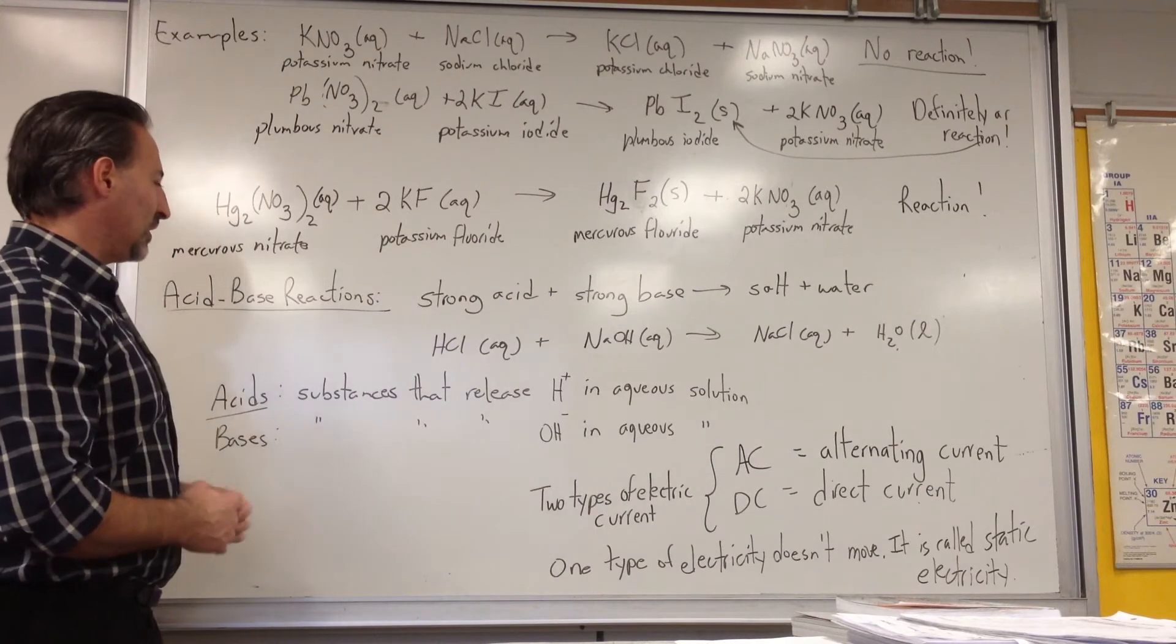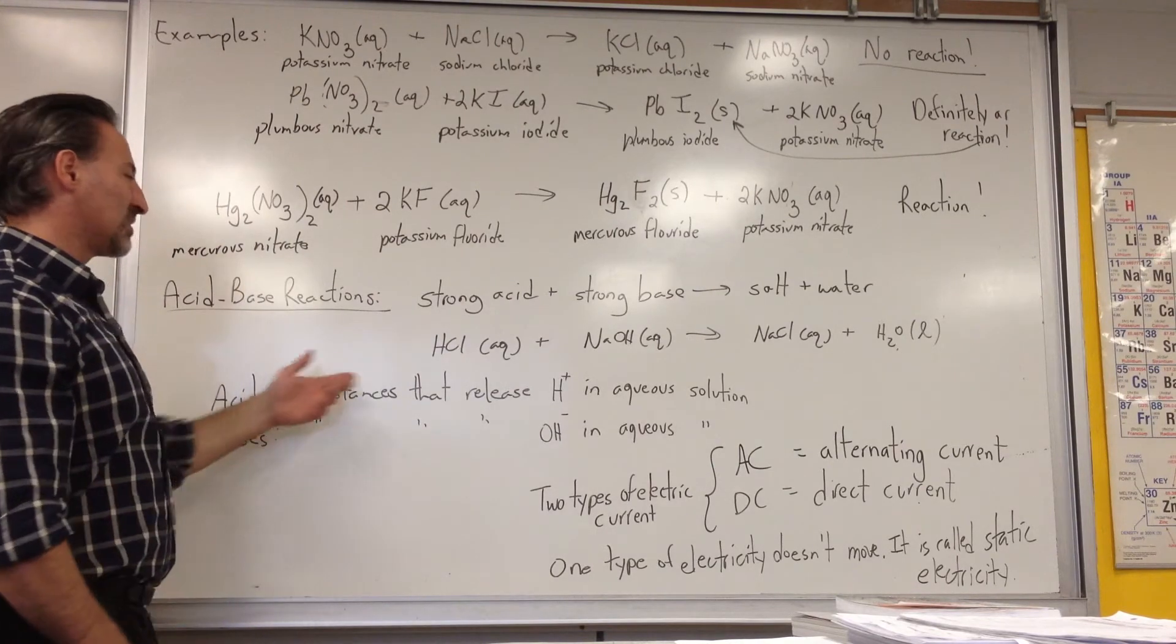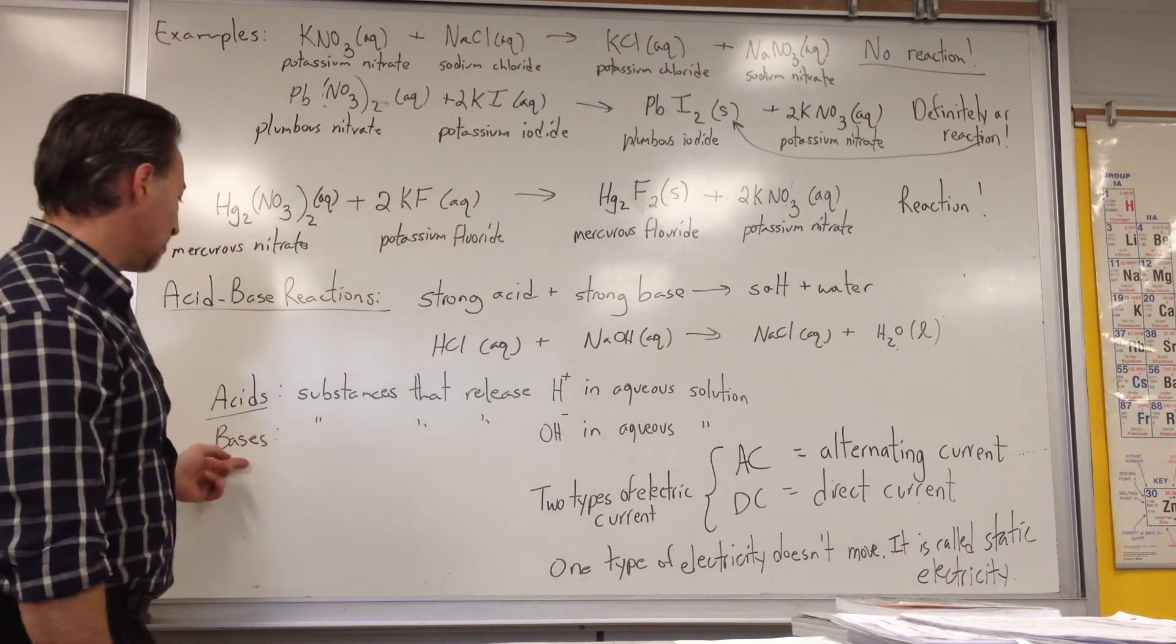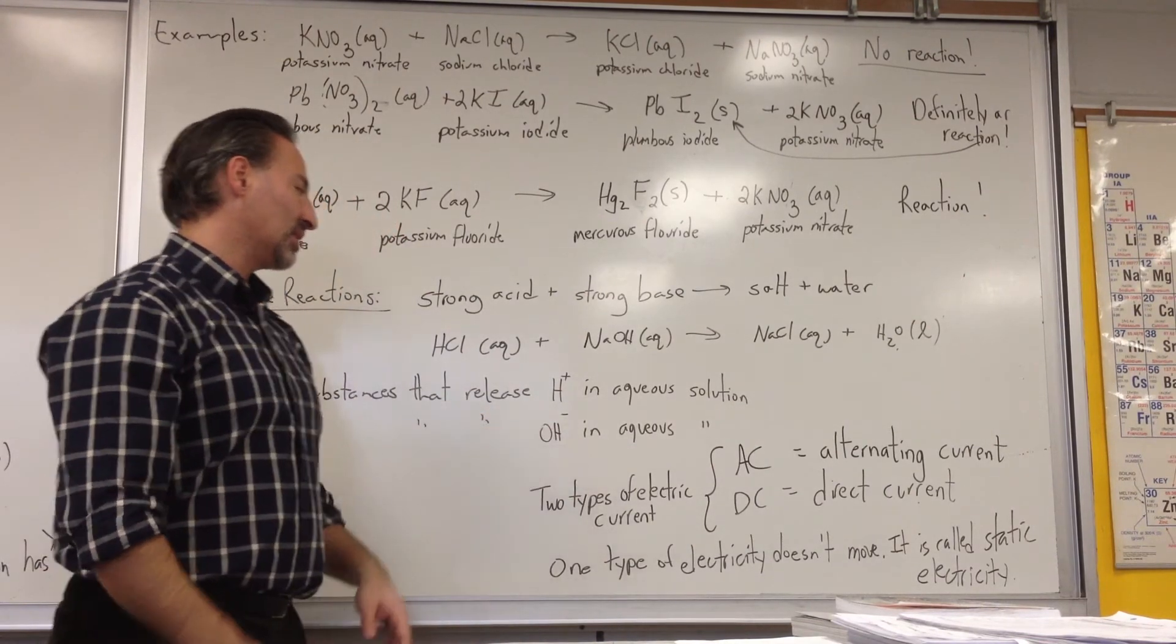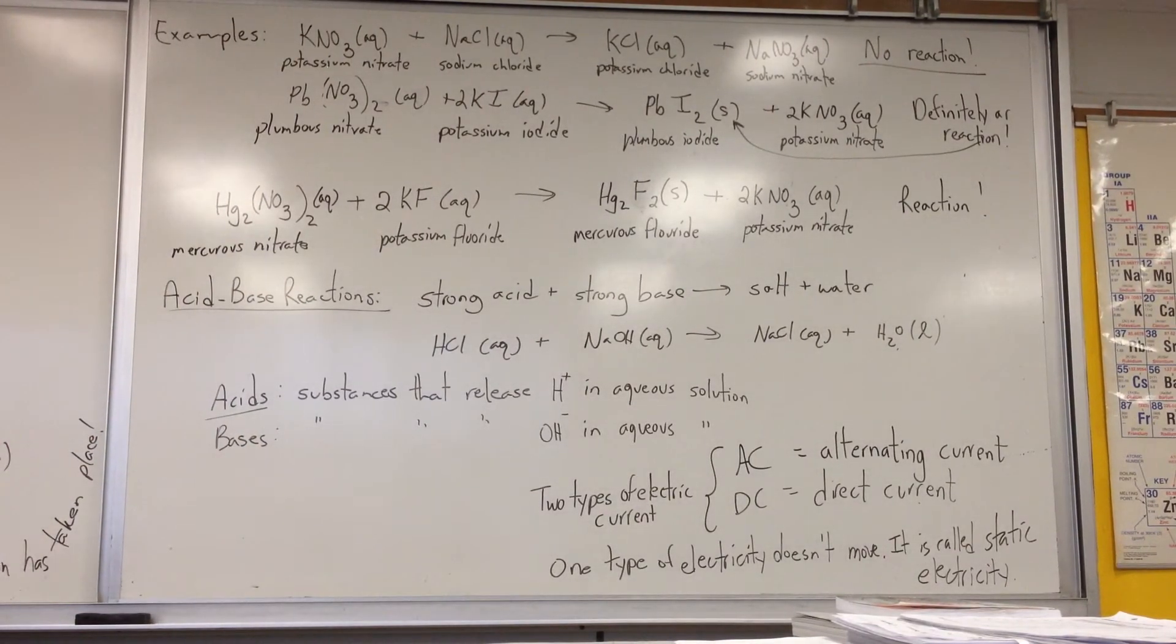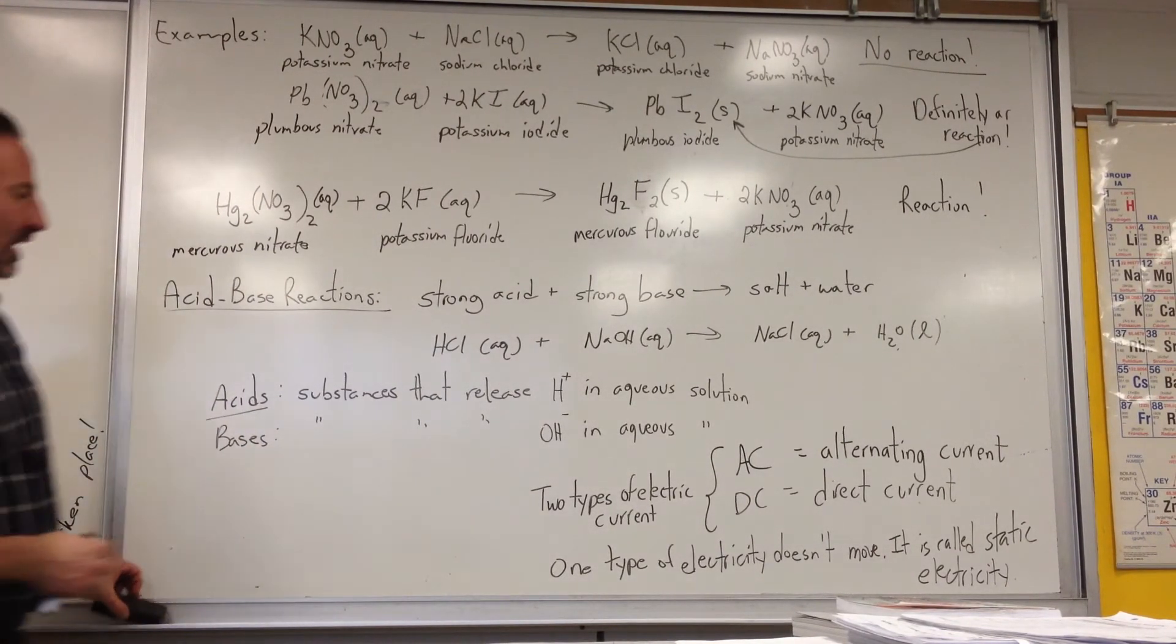And the Arrhenius definition of an acid is a substance that releases H-plus in an aqueous solution, whereas a base is a substance that releases hydroxide in an aqueous solution. That's the first and most primitive form of definition for acids and bases.